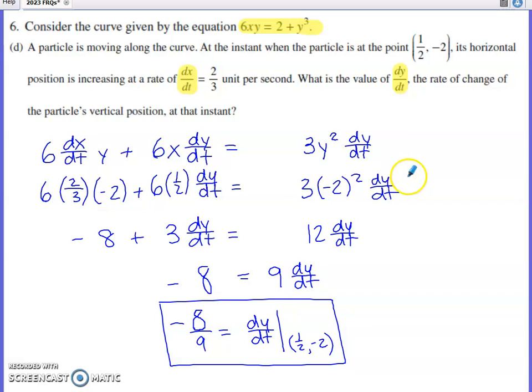I now want to substitute all my specific information. That's a one-half for all of the X's, a negative 2 for all of the Y's, two-thirds for all of the dx/dt's. I'm not putting anything in place of the dy/dt's. I'm going to have to solve this equation for dy/dt.